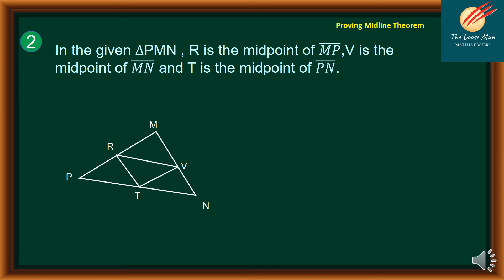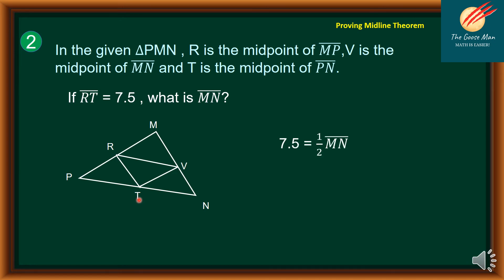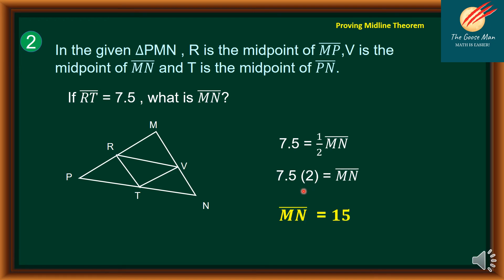Problem 2: Using the same triangle with R, B, and T as midpoints of PM, MN, and NP respectively. If RT is equal to 7.5, what is MN? Since RT equals one-half MN, we have 7.5 equals one-half of MN. Multiplying both sides by 2: MN equals 7.5 times 2, so MN is equal to 15 units.